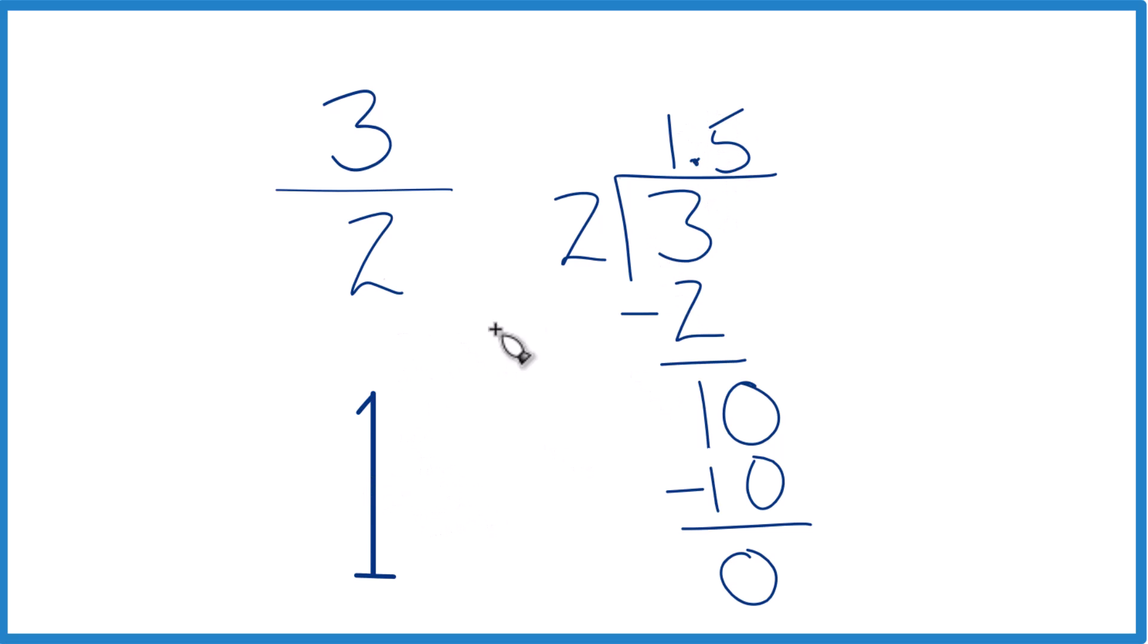So in answer to our question, 3 halves, it's an improper fraction because the numerator is larger than the denominator here. And that's going to be greater than 1.